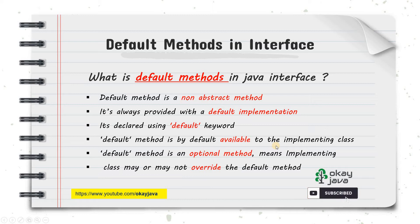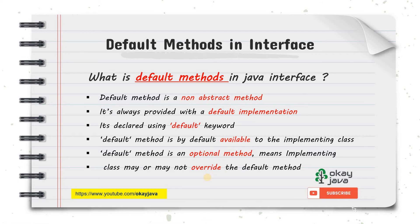A default method is by default available to the implementing class, and it is optional. If you want, you can override the default method; if you do not want to, you can just leave it as is and make use of the default implementation. I'll explain all these points with an example.